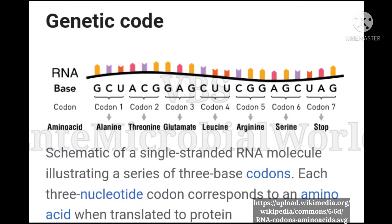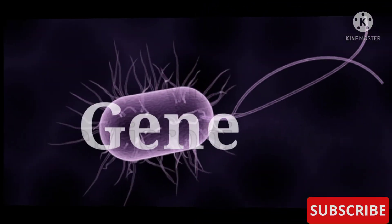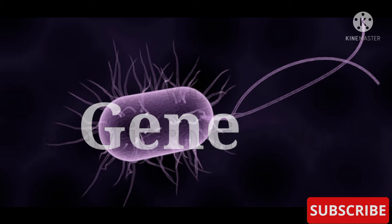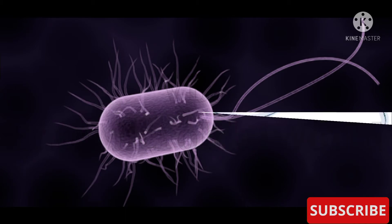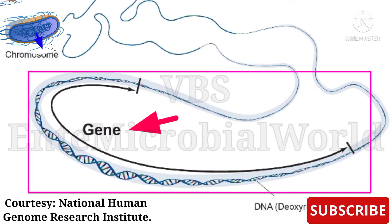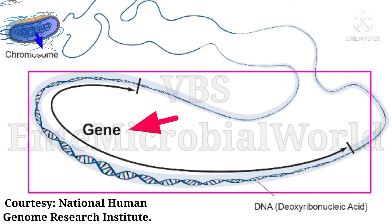Next, we are going to see about gene. A gene is a basic unit of heredity. A gene is a segment of DNA, or a sequence of nucleotides in DNA, that encodes the synthesis of a gene product — either RNA or protein.